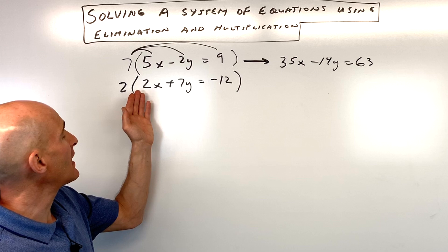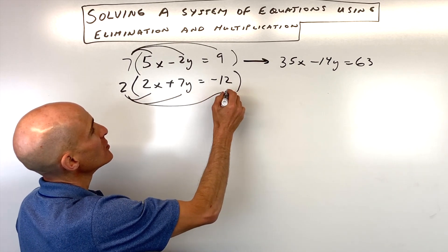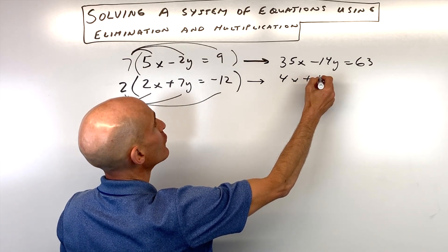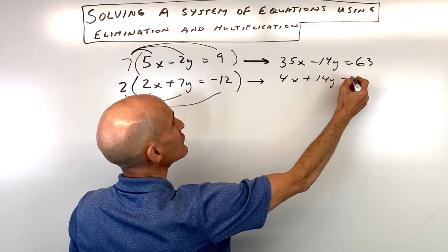Just pick one and stick with that. Now when we distribute the 2 here you can see we're getting 4x plus 14y equals negative 24.